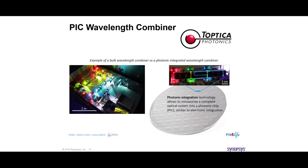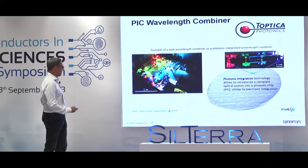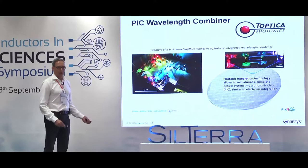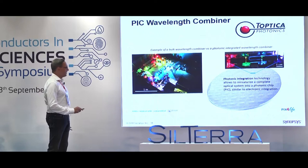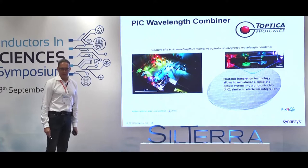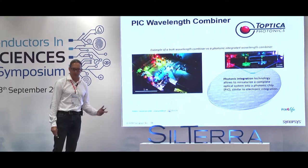Here you can see an optical bench set up to combine four different wavelengths — it's almost a square meter with all the lenses and filters. And here you can see the same device fabricated in a chip, in a silicon nitride platform, now talking about a chip of just a couple of centimeters.